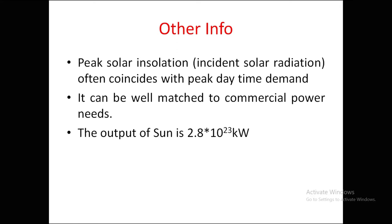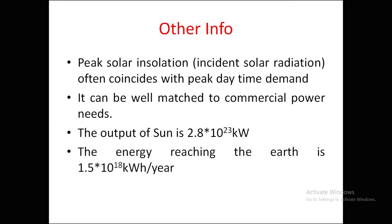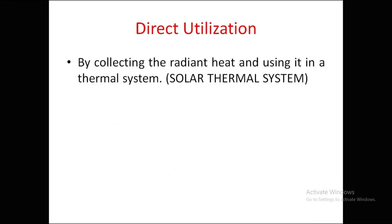The output of the sun is 2.18 × 10²⁸ kilowatts, and the energy reaching the earth is 1.5 × 10¹⁸ kilowatt-hours per year. This means approximately 10⁵ times the energy is lost while traveling from the sun to the earth.